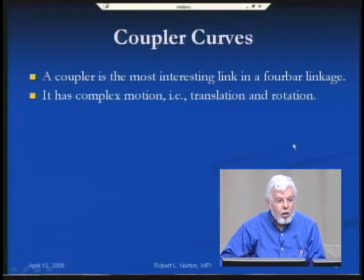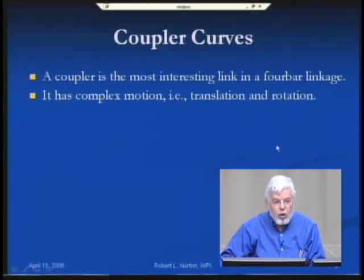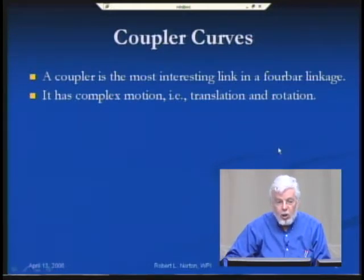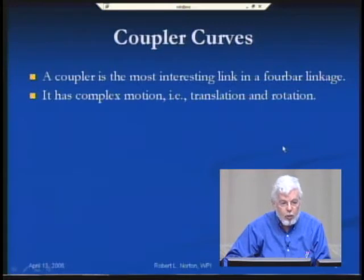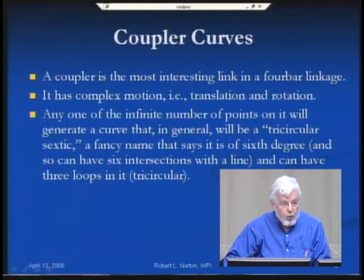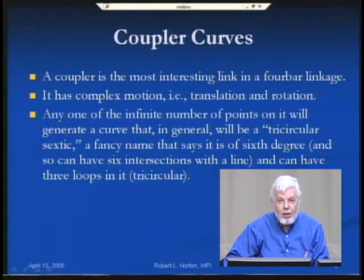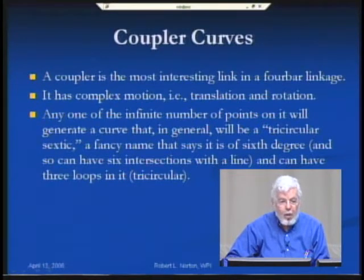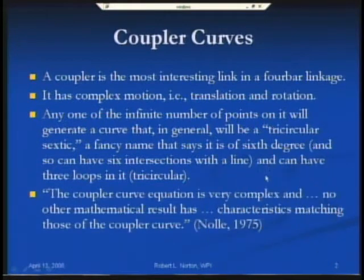Coupler curves are generated by what I think is the most interesting link in a four-bar linkage — not surprisingly called the coupler. It's interesting because it has complex motion: every point of that link is going through a combination of translation and rotation, whereas the crank and the rocker have pure rotation. We can have an infinite number of points on this coupler, and any one of those points will generate a curve that in general is a tricircular sextic.